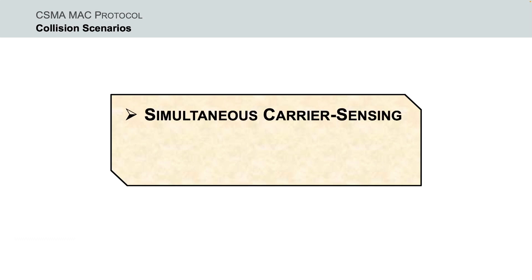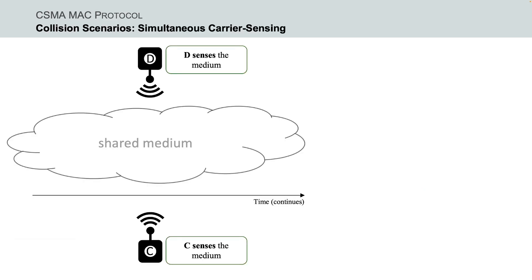The first scenario is related with the simultaneous carrier sensing. For example, two nodes perform the carrier sense mechanism and detect that the shared channel is idle at the same time and therefore they both start frame transmission simultaneously. As a result, there might be a collision.